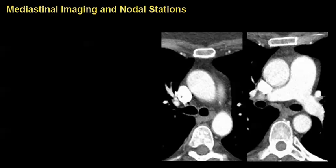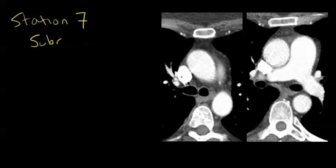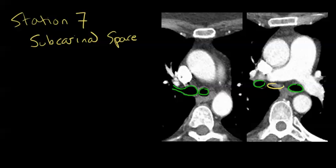Looking at the first two slices of the CT scan, I've focused in on station 7, also known as the subcarinal space. Here you can see the right main stem with the takeoff of the right upper lobe bronchus, and this is the left main stem. Going down a bit, we're now on the bronchus intermedius — the right upper lobe has gone away — and here is still the left main stem. In between here is a level 7 lymph node.